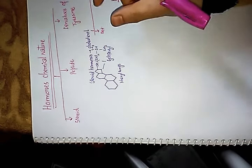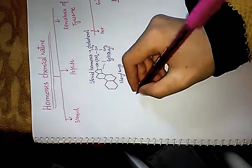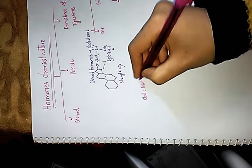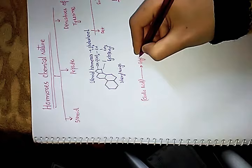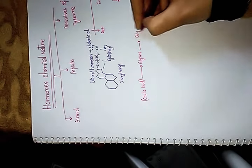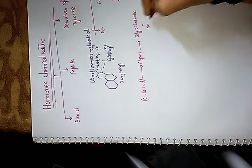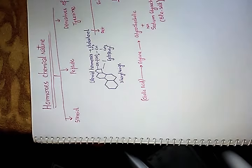Cholesterol has various functions. By far the most common non-membranous use: 80 percent of cholesterol is converted into cholic acid. Cholic acid gets conjugated with glycine to form glycocholic acid, which then combines with sodium to form sodium glycocolate — a bile salt used for digestion.